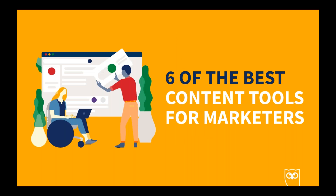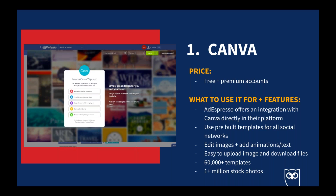As a social marketer I use a variety of free and paid tools — I've narrowed it down to six favorites. Canva is a great tool for every marketer — most offerings are free, which is great for tight budgets. Canva offers pre-built and customizable templates for all social networks, and you can edit images and animations. It's super easy to upload images and design files. I typically use Canva to create pre-made templates for social, dragging and dropping assets to share with my team. AdEspresso also offers a direct integration with Canva in their platform.